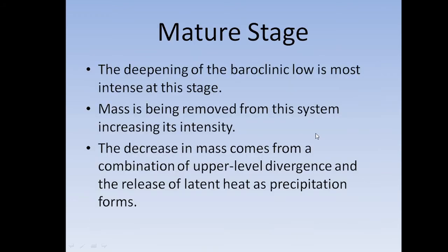In the mature stage, the deepening of a baroclinic low is most intense at this stage. Mass is being removed from the system, increasing its intensity. The decrease in mass comes from the combination of upper level divergence and the release of latent heat as precipitation forms. Precipitation is a heating process — as water molecules condense on CCN, clouds form, become supersaturated, and become raindrops. As precipitation forms, latent heat is released, which intensifies the system because the heat rises, helping to remove more mass out of the low pressure system.